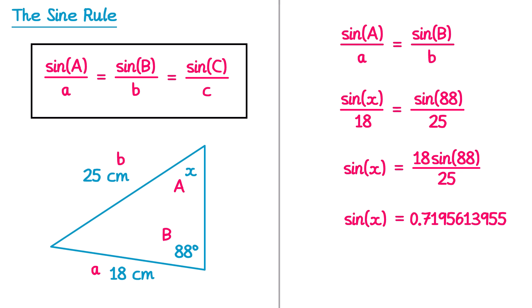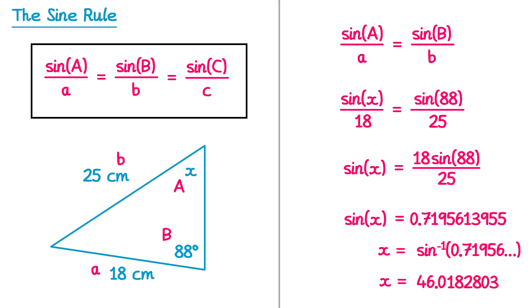To find x we apply inverse sine to both sides. Inverse sine of the left gives x, and typing inverse sine of that decimal into the calculator gives x equal to 46.0182... Rounding to one decimal place, x equals 46.0°.